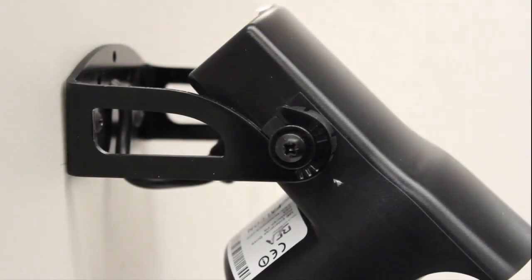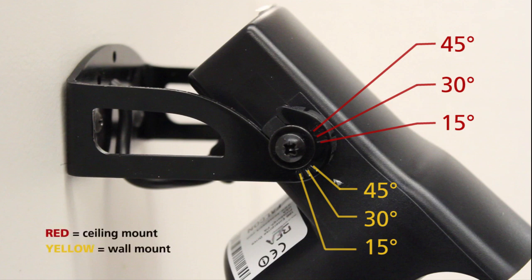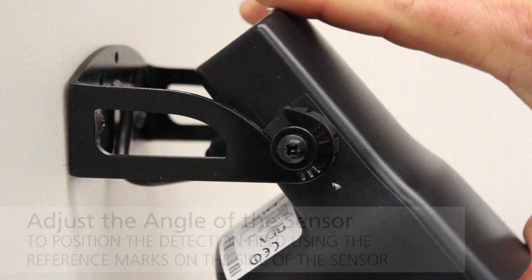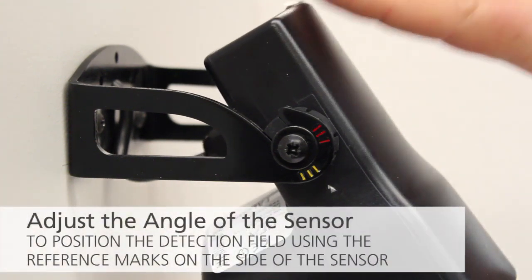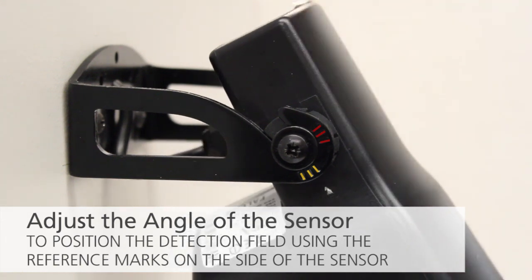Two sets of reference marks are visible on the bracket arms. These marks note tilt angles for both ceiling mount and wall mount installations. Adjust the angle of the sensor to position the detection field using the reference marks on the side of the sensor.